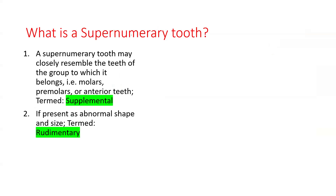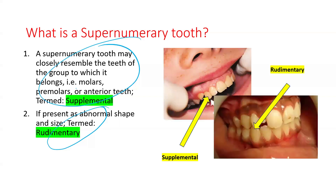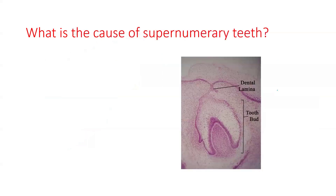If it resembles closely the group to which it belongs, it is known as a supplemental tooth. However, if it is of abnormal shape and size, it is called a rudimentary tooth. In this picture, the supplemental lateral incisor closely resembles the adjacent teeth, whereas the rudimentary tooth does not bear any resemblance to the adjacent teeth.